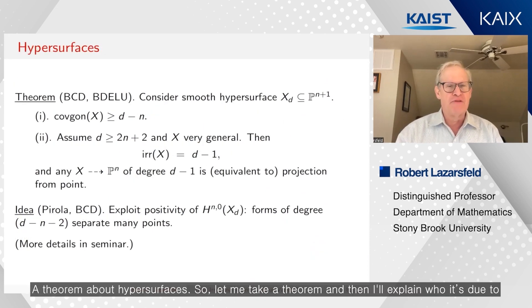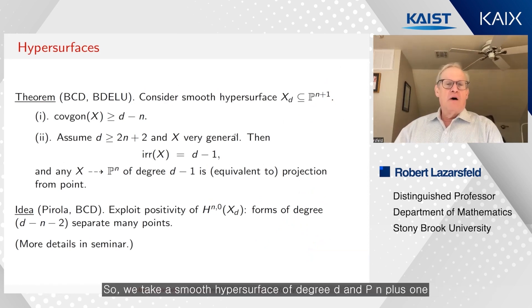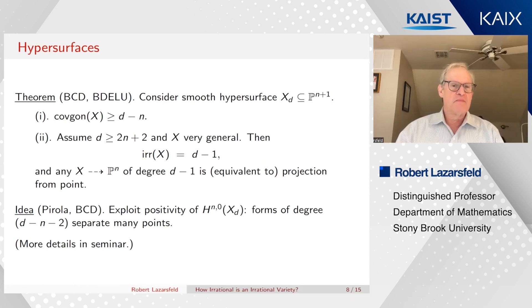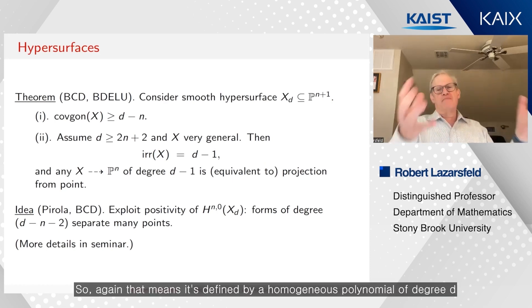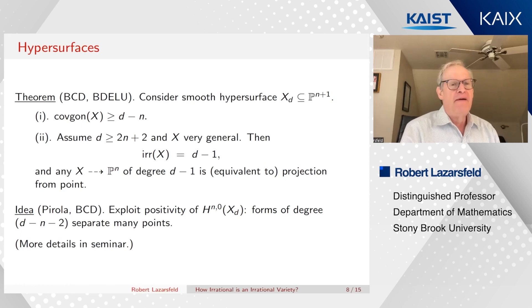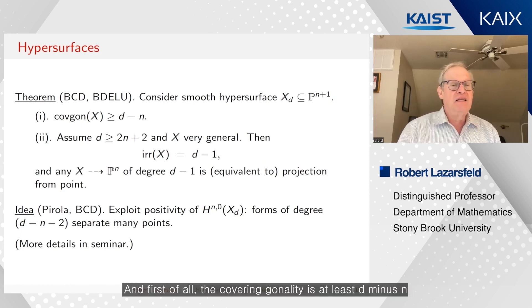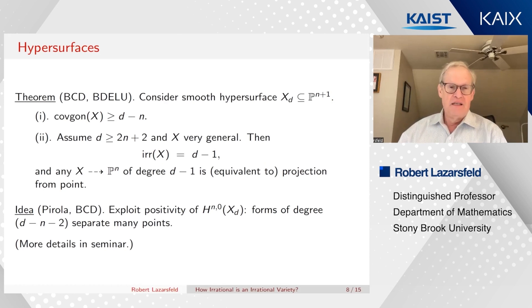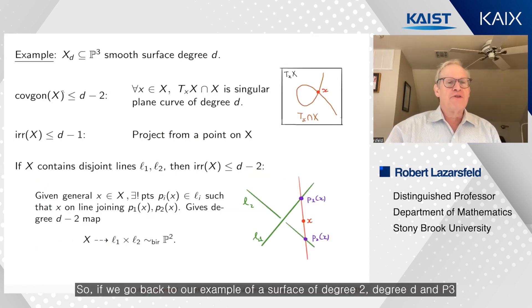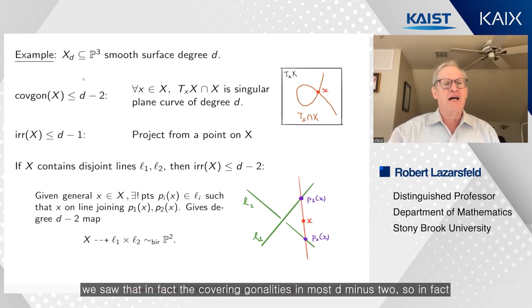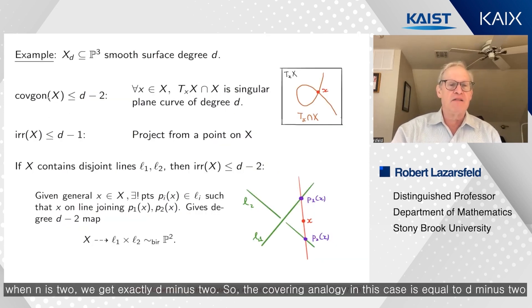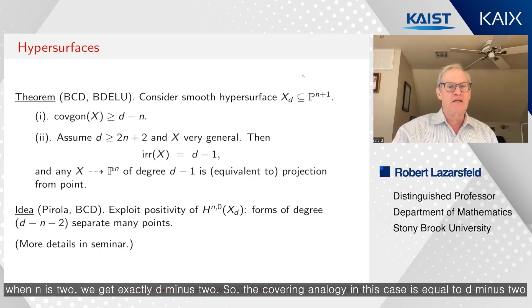A theorem about hypersurfaces. So let me state the theorem and then I'll explain who it's due to. So we take a smooth hypersurface of degree d in P^{n+1}. So again, that means it's defined by a homogeneous polynomial of degree d. And first of all, the covering gonality is at least d-n. So if we go back to our example of a surface of degree d in P^3, we saw that in fact, the covering gonality is at most d-2. So in fact, when n is two, we get exactly d-2. So the covering gonality in this case is equal to d-2.